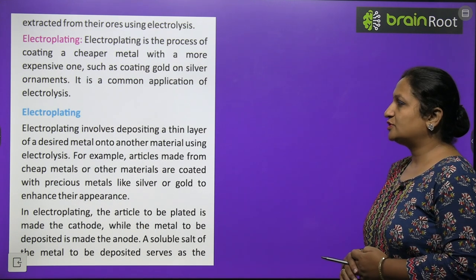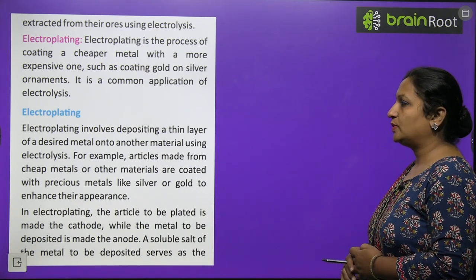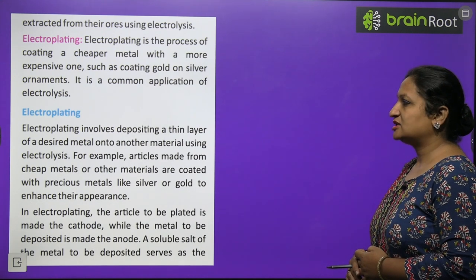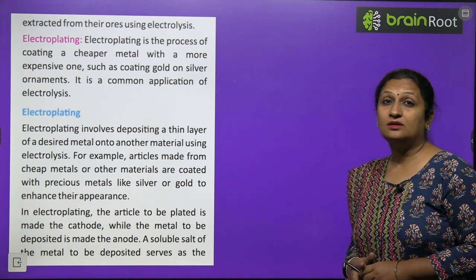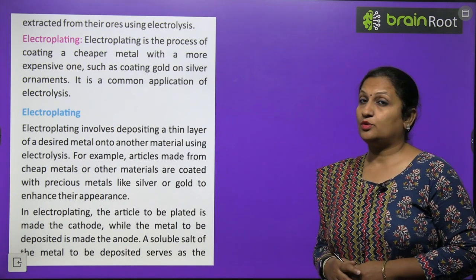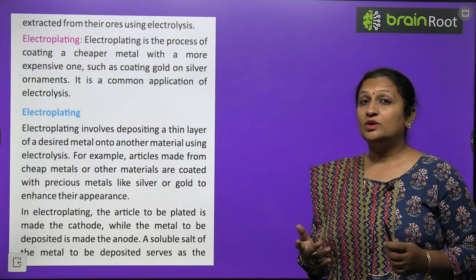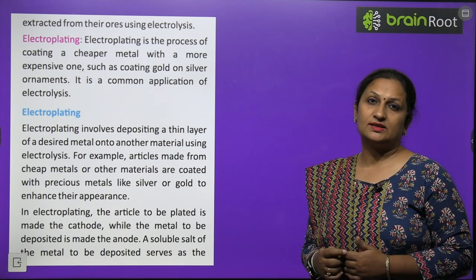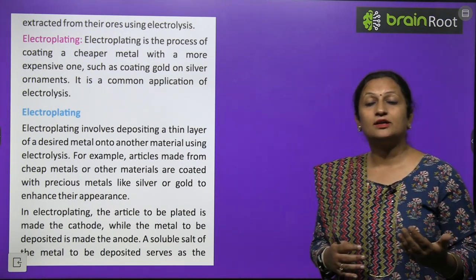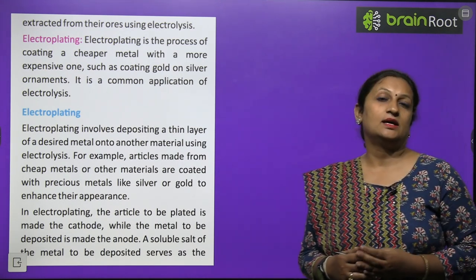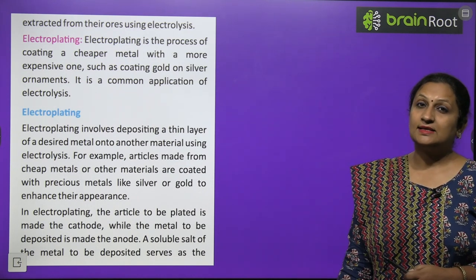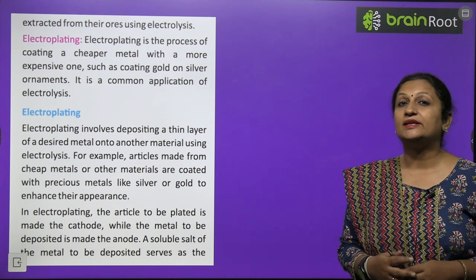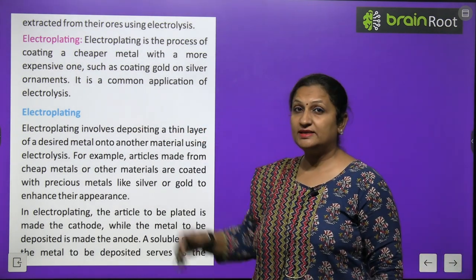Electroplating involves the deposition of a thin layer of a desired metal onto another metal using electrolysis. For example, articles made of cheap metals can be electroplated with gold. Since gold is very expensive, people opt for cheaper jewelry with only a gold plating. You can take any metal necklace and apply a gold plating over it by the process of electroplating, which gives the same look and shine as the original metal.